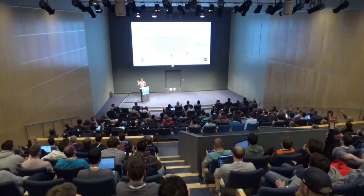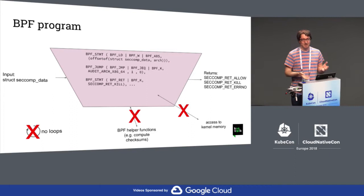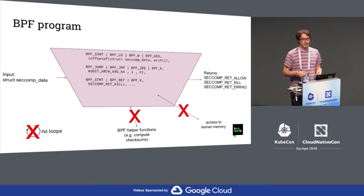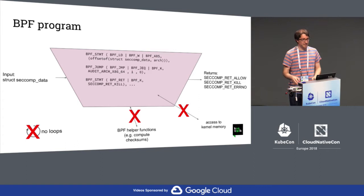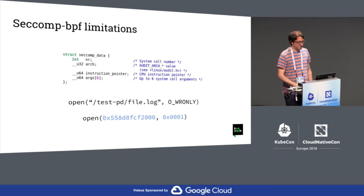A BPF program — BPF is a bytecode. It's a list of instructions that will return an action. A BPF program is executed in the kernel, triggered by some event. For every system call, seccomp will execute the BPF program attached to the process. The program will receive as input a struct seccomp_data with some information about the system call, and the program will have to decide what action to take. It's quite limited in what it can do. There can be no loop in the program. The program cannot access kernel memory or the memory of processes.